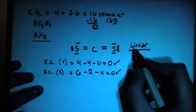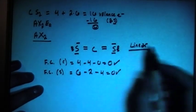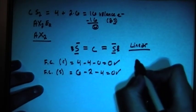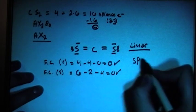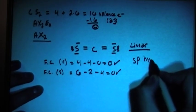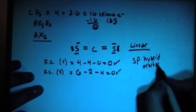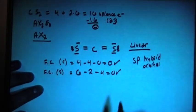And the hybrid orbitals of the central atom, the carbon, since there's two things attached to it, it's going to be sp hybrid orbital, two orbitals, two things attached.